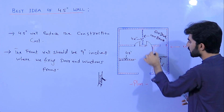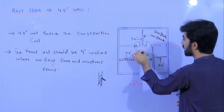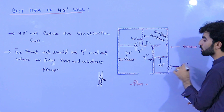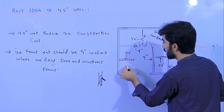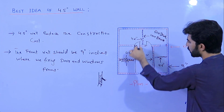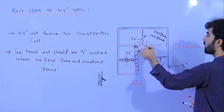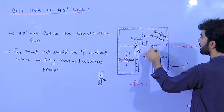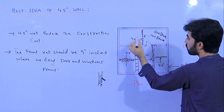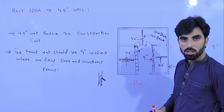Try to use half brick, meaning 4.5 inch wall, for the partitions. As you can see, this is a partition and this front is 9 inches. This front is also 9 inches. This exterior wall is 9 inches. But the partition wall should be 4.5 inches. So to summarize: this is 9 inch, this is 9 inch, this is 4.5, this is 4.5, and this is 4.5.